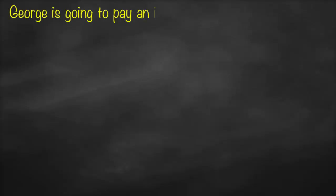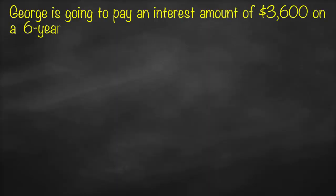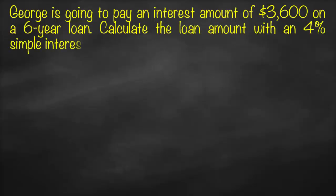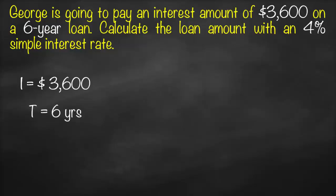Another question: George is going to pay an interest amount of $3,600 on a six-year loan. Calculate the loan amount with a 4% simple interest rate. The variables are: interest amount = $3,600, time = 6 years, simple interest rate = 4% per annum. Note that if a question doesn't specify a frequency, the default is annual; quarterly, monthly, or weekly rates will be explicitly mentioned.